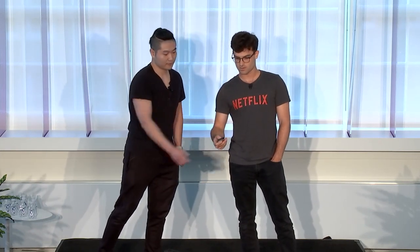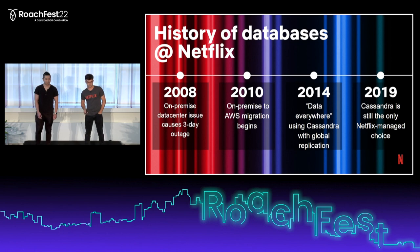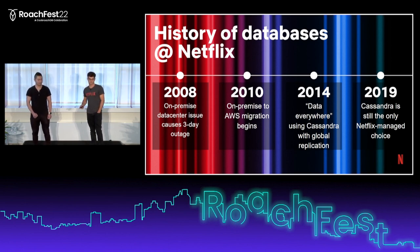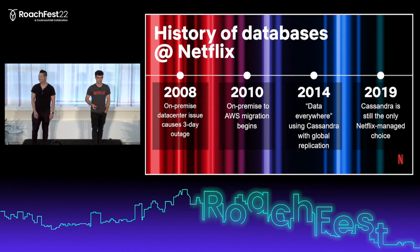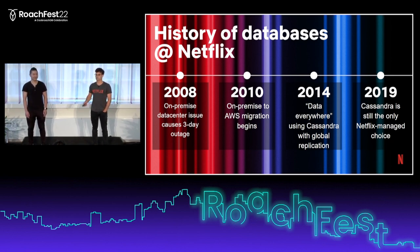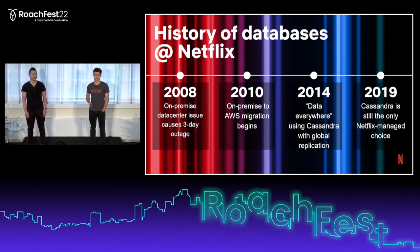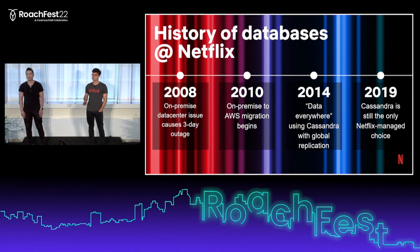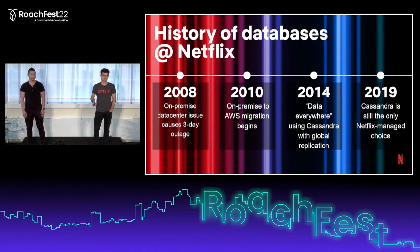We're going to be talking about our journey with CockroachDB. I'll start by setting the context and history to get to the point of how we decided to use CockroachDB. The nice thing about working at Netflix is I don't have to explain what we do. But many years ago, Netflix was a DVD-by-mail service. We quickly pivoted to a streaming service, and at that point we had to care a lot about resiliency, availability, and latency to make the customer experience really good.